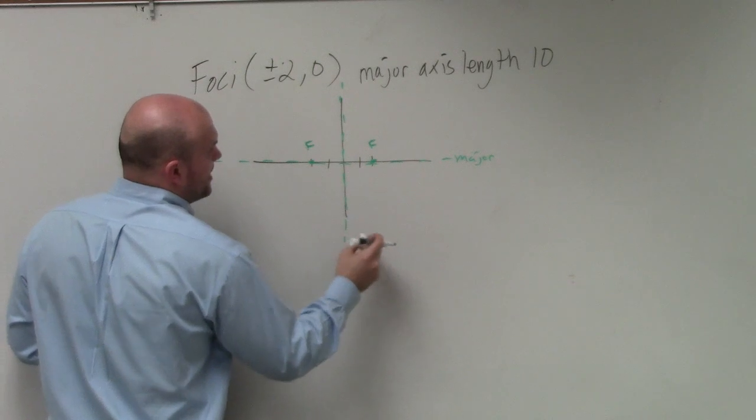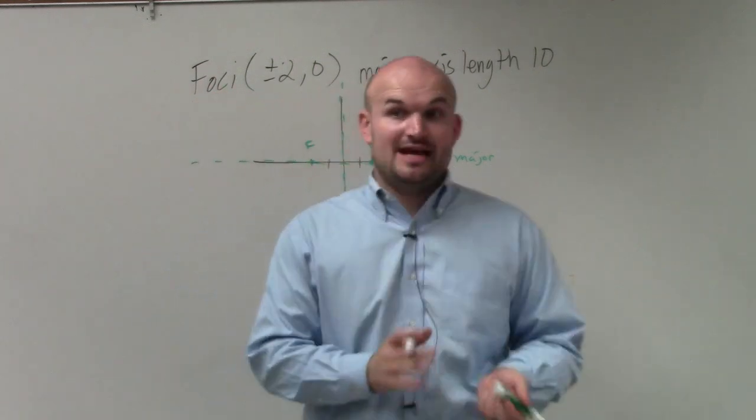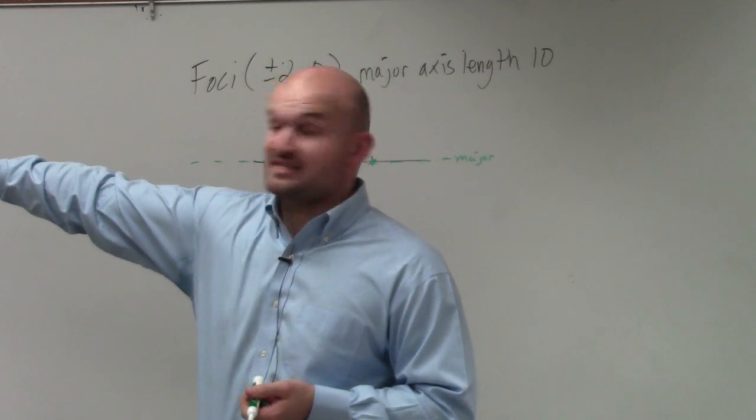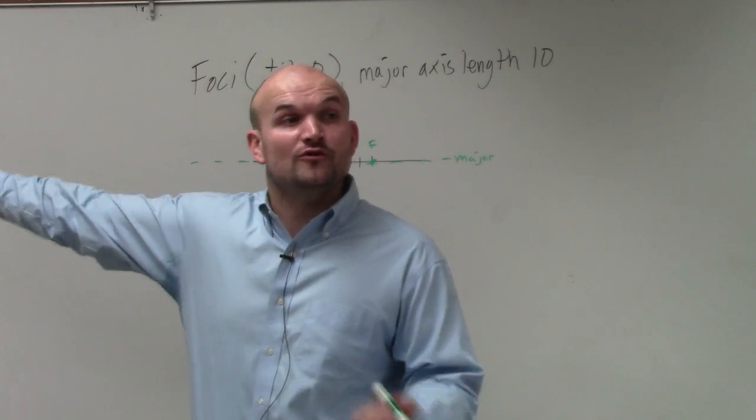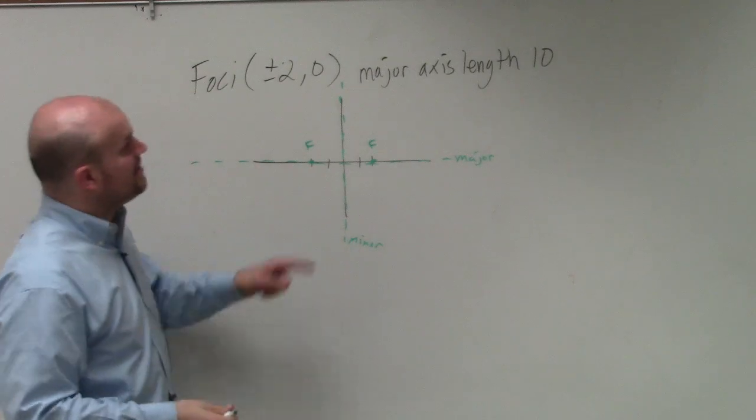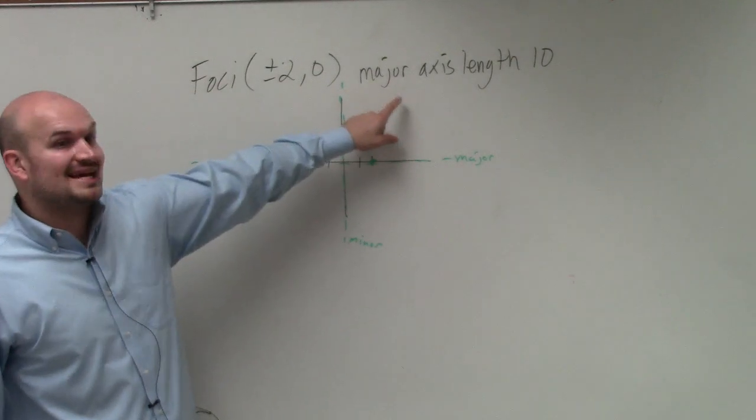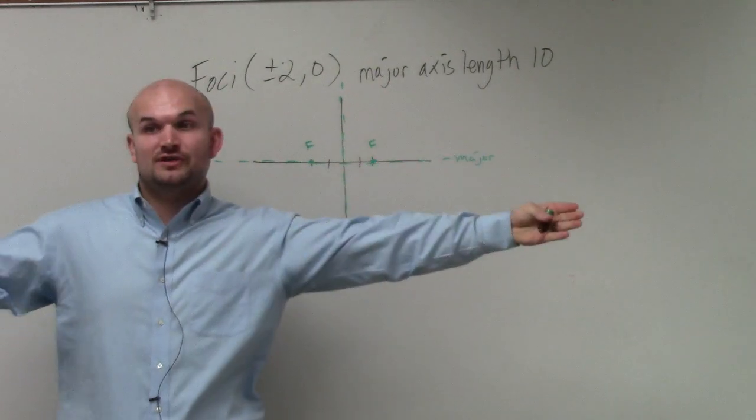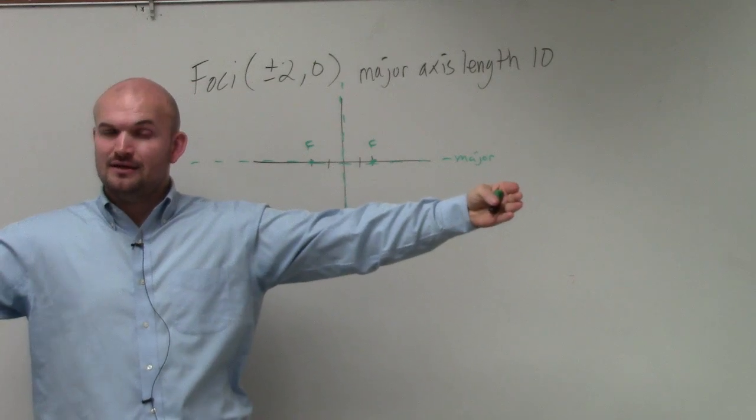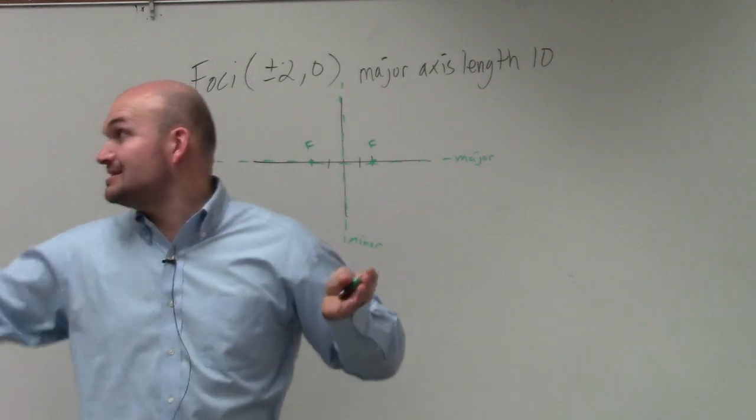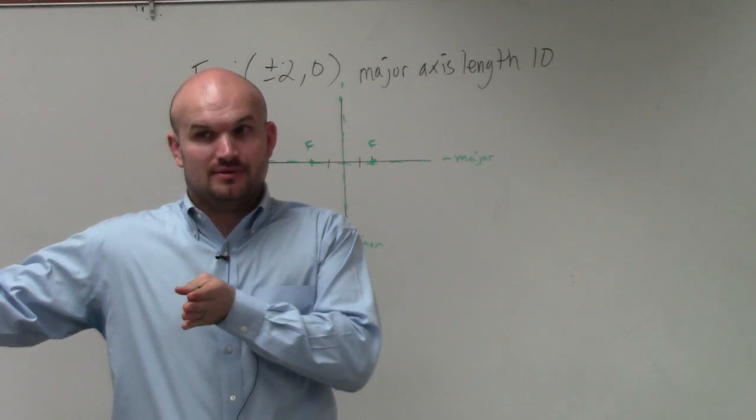So what's important about knowing the major and the minor axis? Well, the major axis, what else lies on the major axis? The center goes through it, as well as the vertices. So the only thing we know about the vertices is the major axis length is 10. That means from one vertices to the other vertices is 10. Well remember, a represents the distance from the center to a vertices, correct?